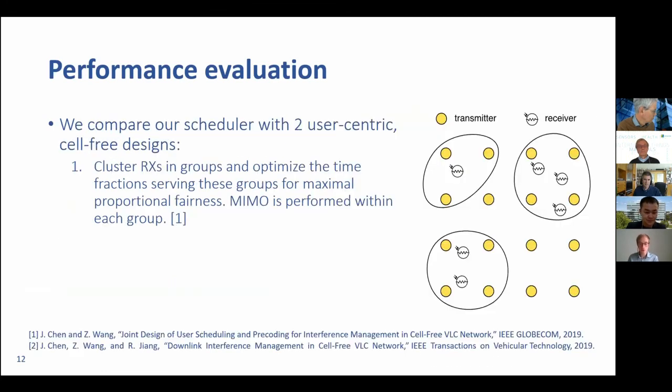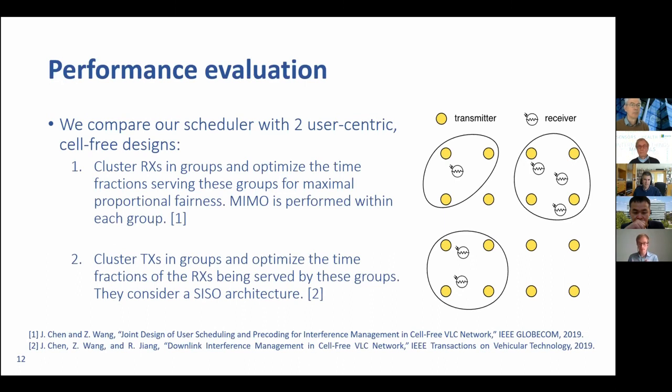We also compare our scheduler with two user-centric and cell-free designs. These are considered as the state of the art. Cell-free means that there is no fixed cell; users are clustered and are served by a set of transmitters dynamically. The first work clustered the receivers in groups and aims to maximize the proportional fairness. MIMO is then performed for every user group. The second work aims to cluster the transmitters in groups and optimize the time fractions of the receivers that are then being served by these groups. They consider a SISO architecture.